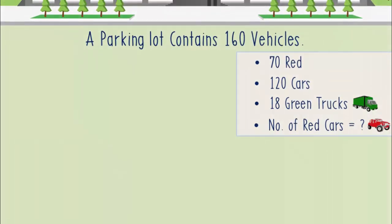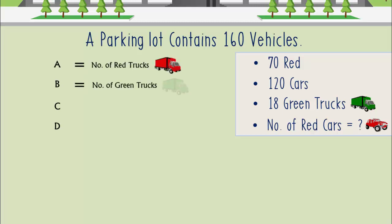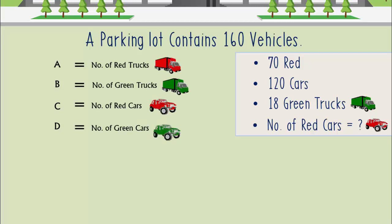This problem can be solved in many different ways with the help of simple equations. Let's consider the variables A, B, C, and D represent the number of red trucks, green trucks, red cars, and green cars respectively. We know that the number of green trucks is 18 and we need to find out the value of C.